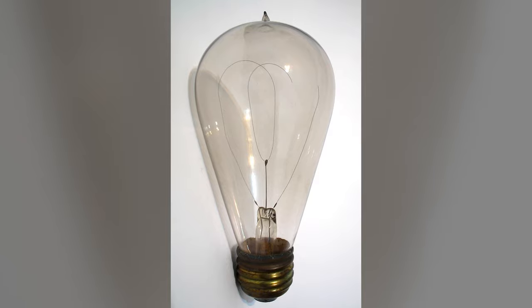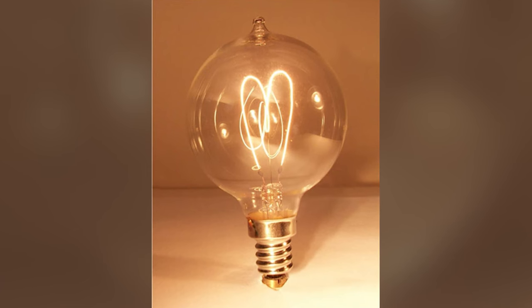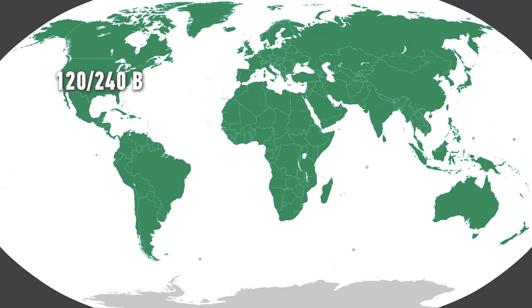Carbon lamps burned out quickly when the voltage increased, which prevented the US from raising it much above 110 volts. Only the appearance of tungsten filaments, devoid of this drawback, allowed it to be raised to 120 volts — a little more, but again for compatibility with existing equipment. Now the standard in the USA is 120 volts. By 1980, Europe had 220 volts in the continental part and 240 in Great Britain under the influence of America, so it was decided to average up to 230.